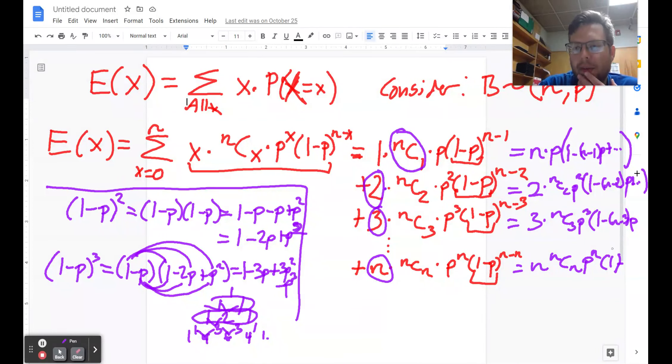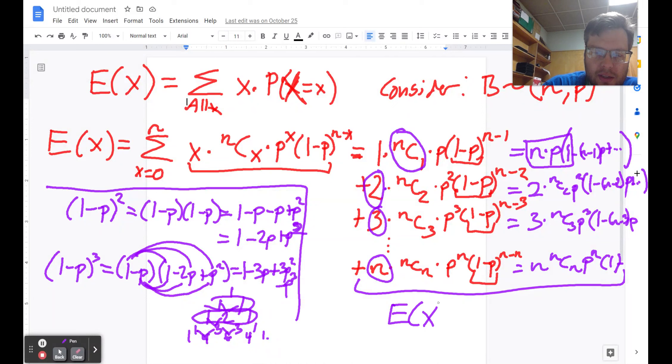And what ends up happening is everything cancels out except for one thing. The only thing that you end up with at the end of all of this work is np times 1. Because every other term that you write down gets canceled out because of the flip-flopping, pluss and pluss and minuses. So after all of that, and I apologize that I'm not going to show each and every one of the steps, but after all of that gets written out, you're going to end up with this formula that the expected value is just equal to n times p.